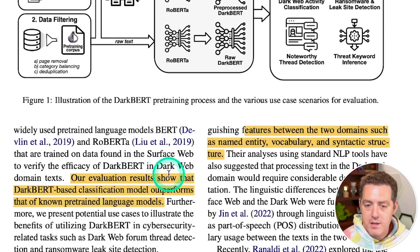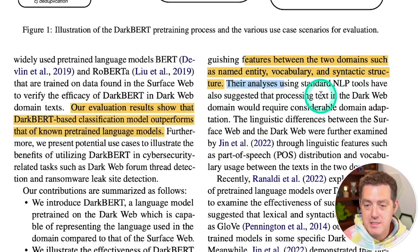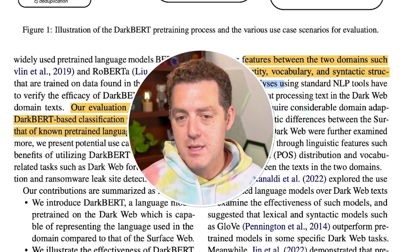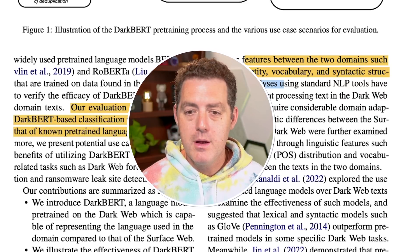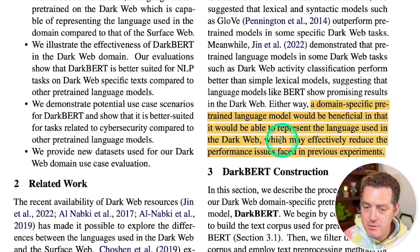Their evaluation results show that DarkBERT-based classification models outperform known pre-trained language models. Their analyses using standard NLP tools suggest that processing dark web text requires considerable domain adaptation — you can't use the same models from the surface web. A domain-specific pre-trained language model would be beneficial, able to represent dark web language and effectively reduce the performance issues faced in previous experiments.